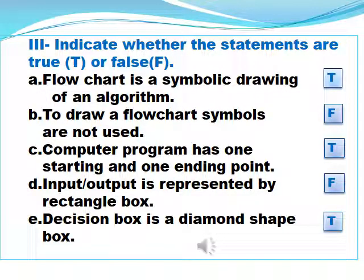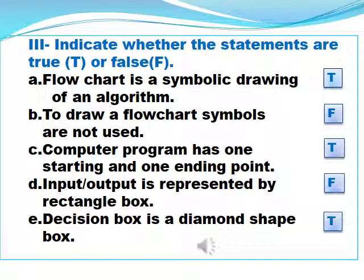Move on to exercise 3 — indicate whether the statements are true or false. Dear students, read these sentences carefully and answer properly. A. Flowchart is a symbolic drawing of an algorithm — true. B. To draw a flowchart, symbols are not used — false. C. Computer program has only one starting and one ending point — true. D. Input and output is represented by rectangle box — false. E. Decision box is a diamond-shaped box — true.